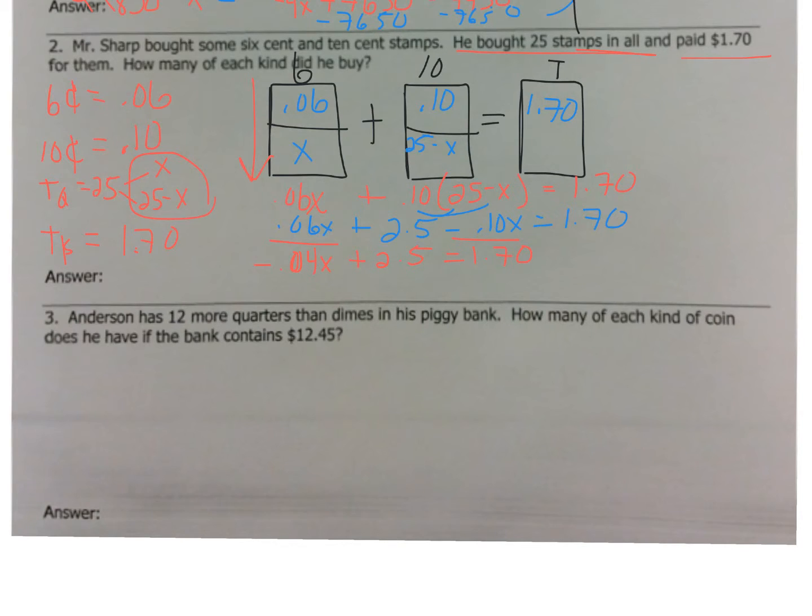So, now from here, we are going to subtract the 2.5 over. So, minus 2.5. I'm going to bring it over here a little bit. So, negative 0.04X equals negative 0.8, divide by negative 0.04. So when I do that out, you get X is equal to 20. Alright, great.